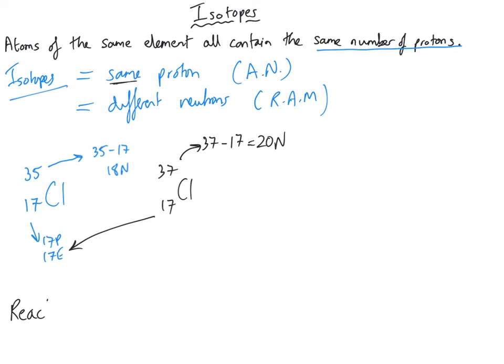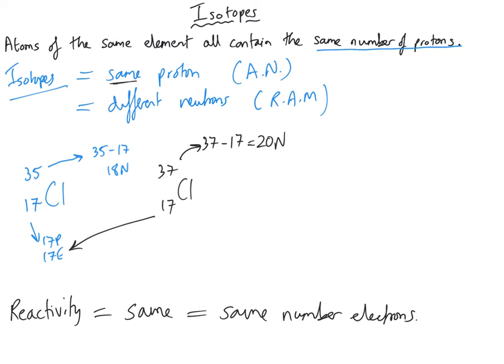In terms of chemistry and specifically reactivity, because isotopes have the same number of electrons, their reactivity is going to be the same. It's electrons that determine the reactivity of any given element. Because isotopes have the same number of protons, they have the same number of electrons, and so the same reactivity. These two atoms of chlorine will have the same reactivity.